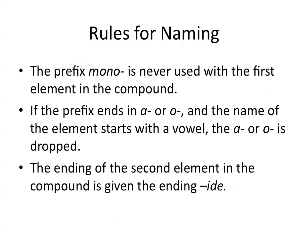The other rules for naming are that the prefix mono is never used with the first element in the compound. So if your first element in the compound is just a single atom of that element, we would not use the prefix mono. But if the second atom in the compound was a single atom of an element, then you would use the prefix mono.